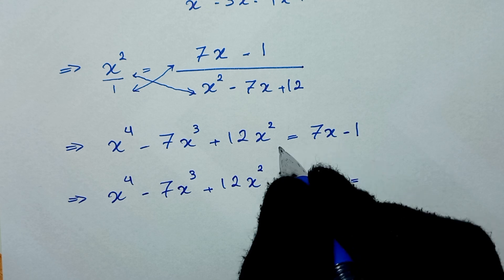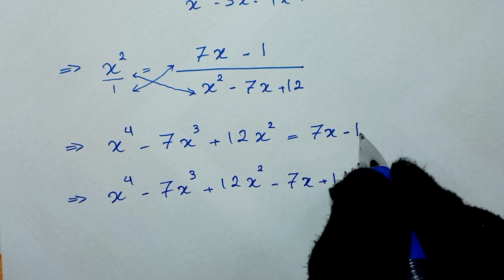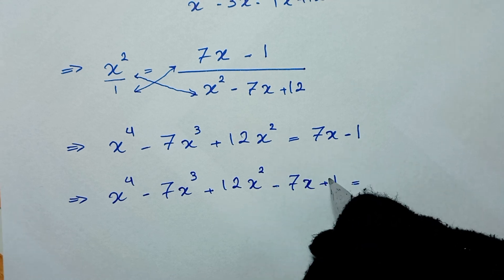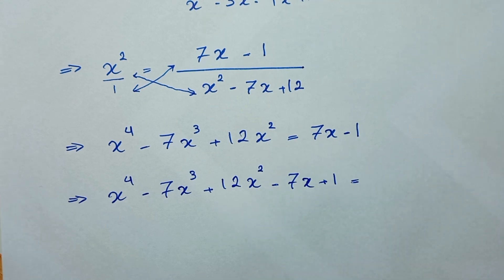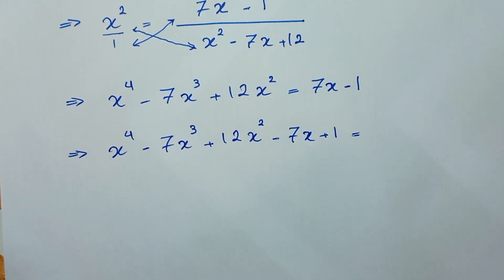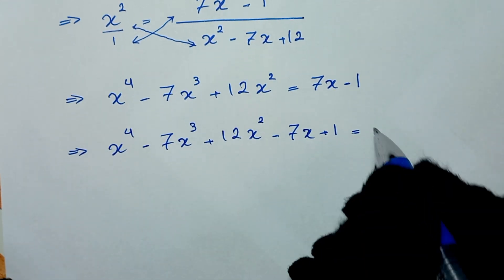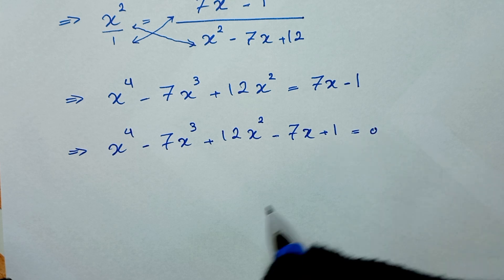We bring all terms to one side. Taking terms to this side and that side, we get x to the power of 4 minus 7x cubed plus 12x squared minus 7x plus 1 is equal to 0.